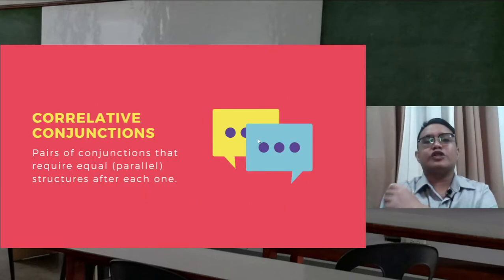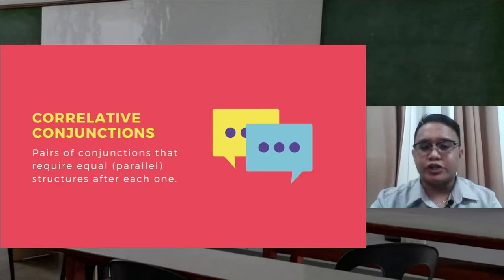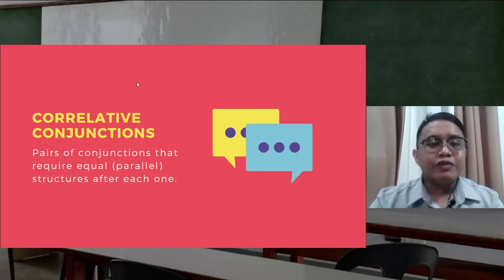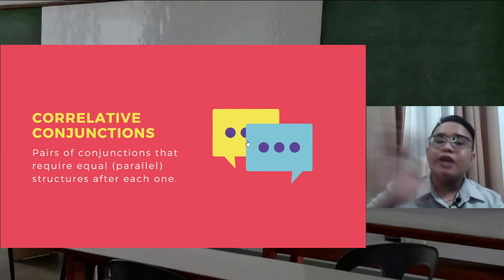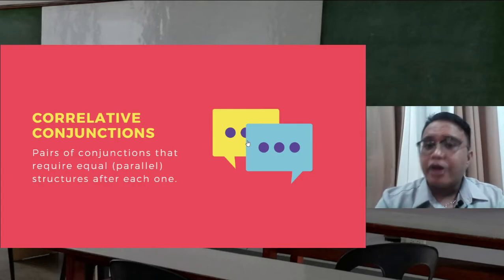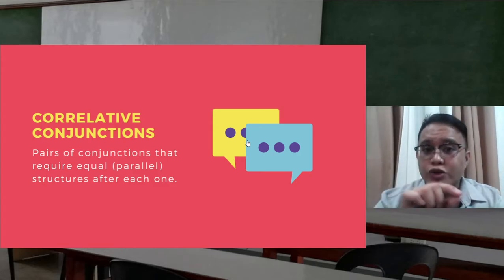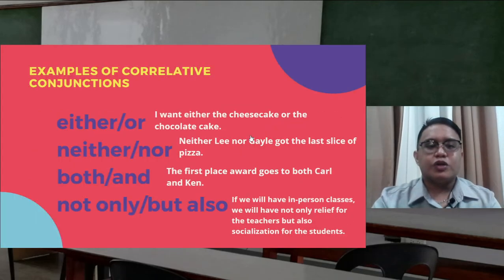Now let's go to correlative conjunctions. Correlative conjunctions are pairs of conjunctions — they always come in pairs. They require equal or parallel structures after each one, meaning word to word, phrase to phrase, or clause to clause.